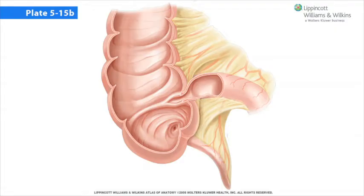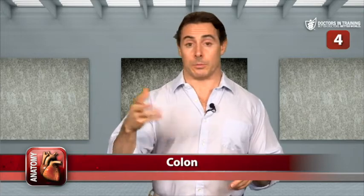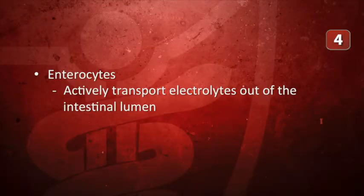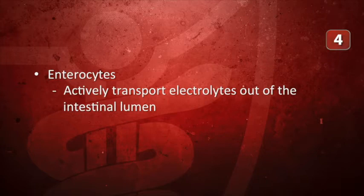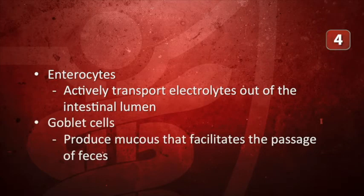The mucosa of the large intestine has no villi and thus appears smooth at the gross level. However, enterocytes, or absorptive cells, are abundant. Their function is to actively transport electrolytes out of the intestinal lumen; water passively follows the electrolytes and is also absorbed. Goblet cells, which produce mucus that facilitates the passage of feces, are also abundant in the large intestine, especially distally.